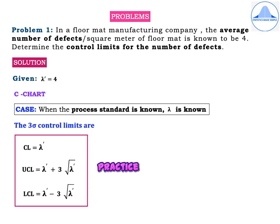Problem 1. In a floor mat manufacturing company, the average number of defects per square meter of floor mat is known to be 4. Determine the control limits for the number of defects. In this problem, the floor mat manufacturing company will be the population and the average number of defects per square meter is given to be 4.